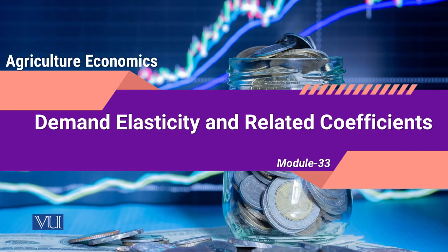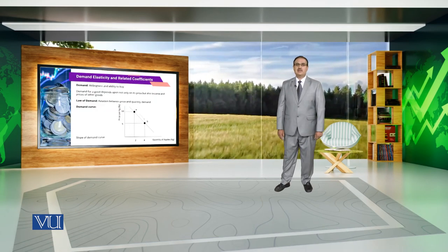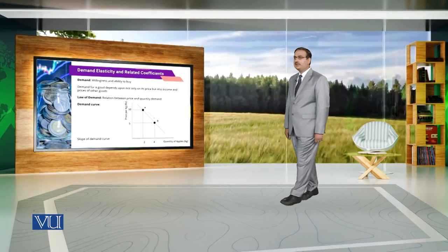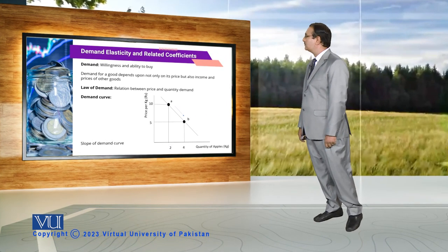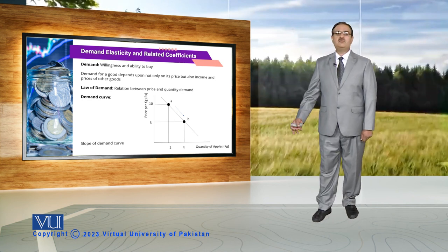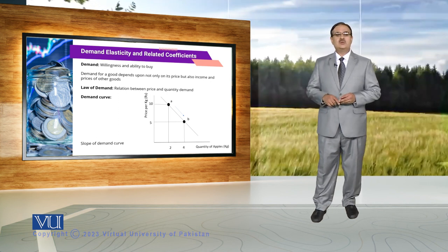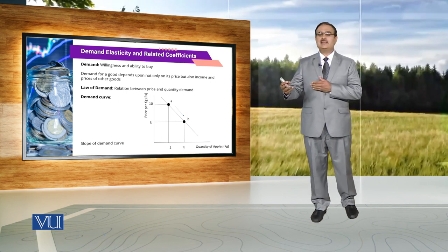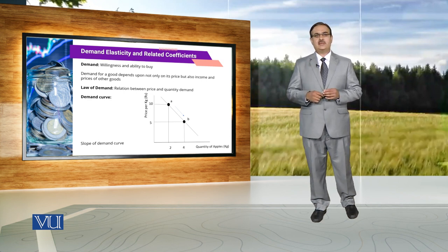Module 33: Demand Elasticity and Related Coefficients. Just as you are familiar with, demand basically indicates willingness and ability to buy. Demand for a good depends not only upon its price but also on income and prices of other goods. When we talk about the Law of Demand, that is basically the relationship between price and quantity demanded.